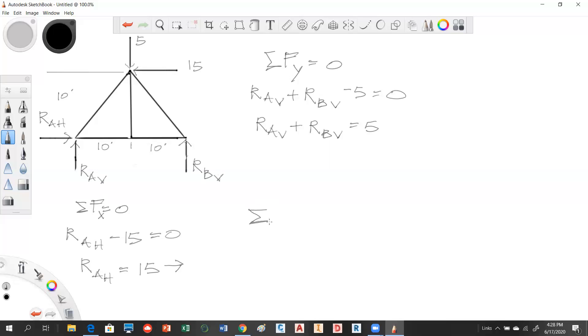Sum of moments about any point have to equal 0. We're going to define clockwise moments as positive. I'm going to go ahead and take it at A, knock out those two unknowns and we'll be left with B.